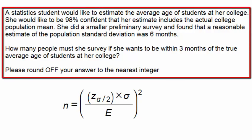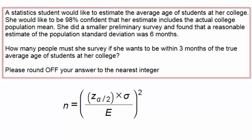A statistics student would like to estimate the average age of students at her college. She would like to be 98% confident that her estimate includes the actual college population mean. She did a similar survey and found that a reasonable estimate of the population standard deviation was six months. How many people must she survey if she wants to be within three months of the true average age of students at her college? Please round off your answer to the nearest integer.